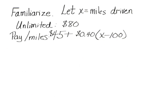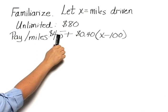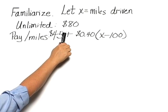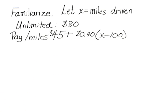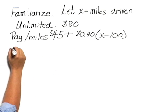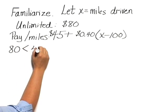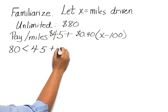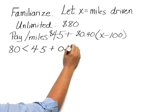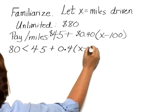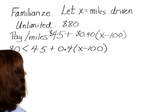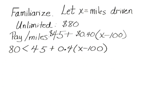Now we're asked to find for how many miles the unlimited plan would save Danny money. So we're looking for where the cost for the unlimited plan is less than the cost where she pays for each mile over 100. That would give us the inequality: 80 is less than 45 plus 0.4 times X minus 100. The solutions to this inequality will give us the number of miles for which the unlimited plan will be less expensive.